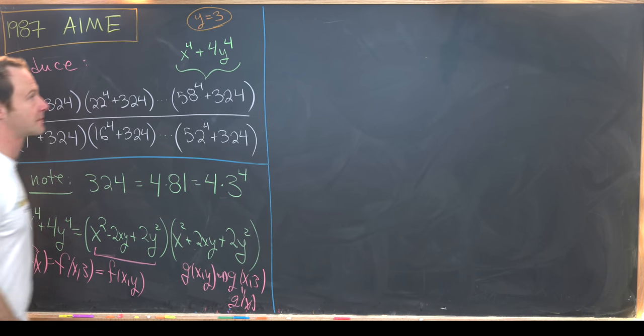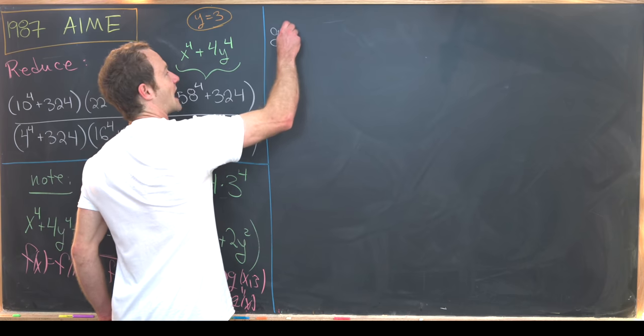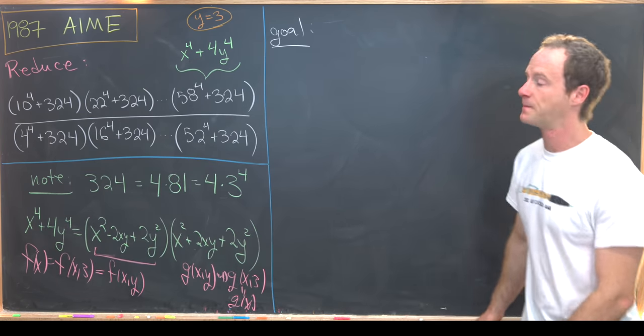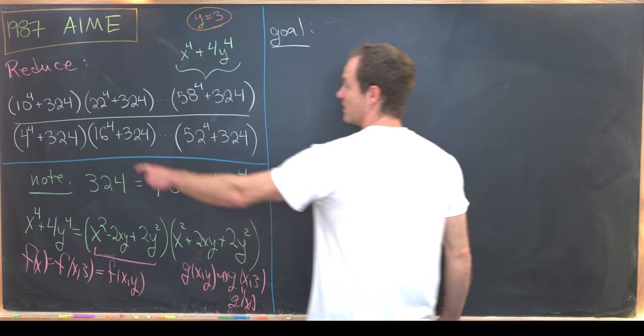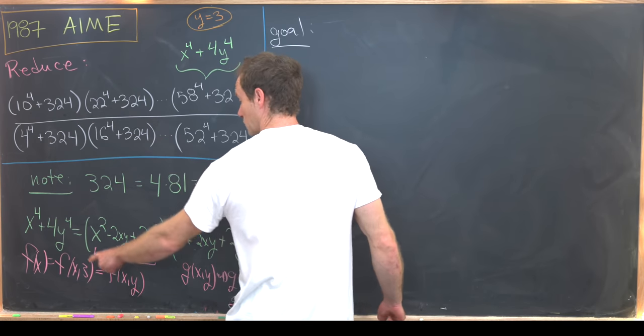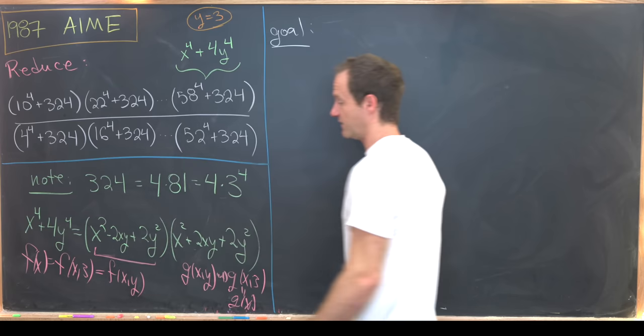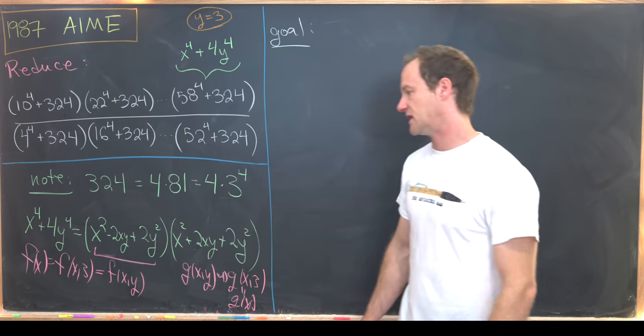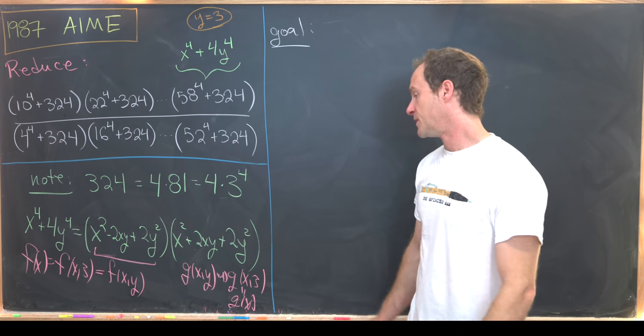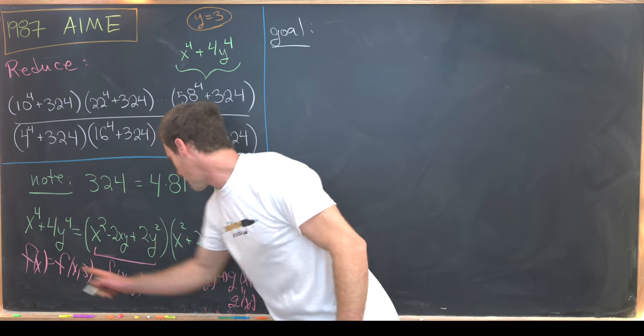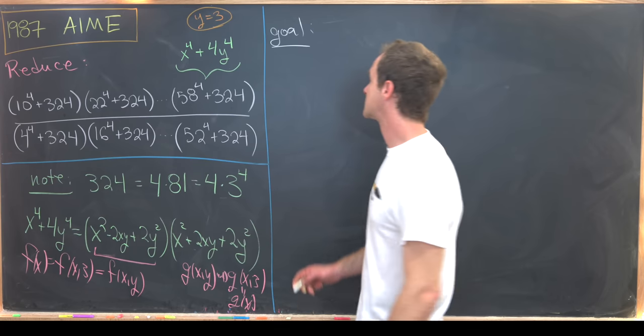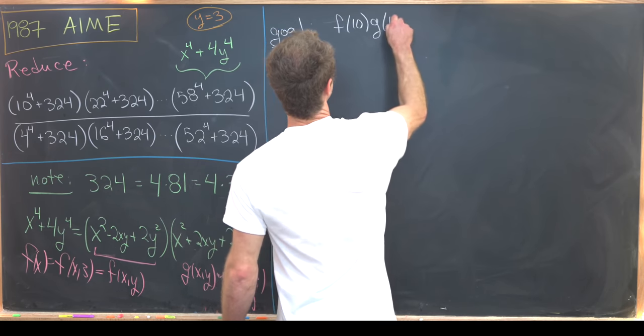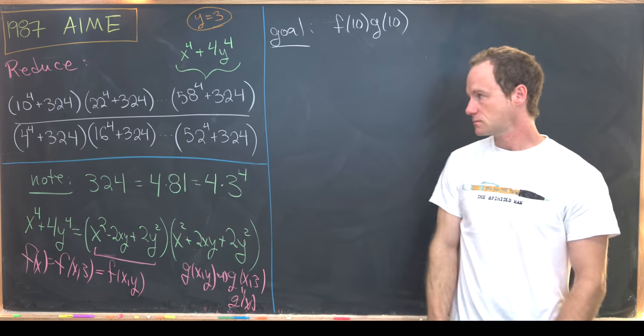So let's see what we can do from here. Let's take our goal object, which I'll just call the goal. Notice that this term is equal to this left-hand side evaluated at 10, which means it's equal to this right-hand side evaluated at 10. But this right-hand side is f of x times g of x. So that means here we have f of 10 times g of 10.